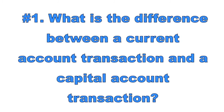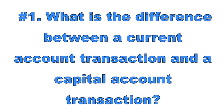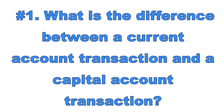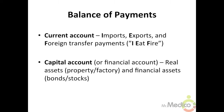Number one: what is the difference between a current account transaction and a capital account transaction? The balance of payments system keeps record of all foreign transactions. There are two main accounts: the current account and the financial or capital account. The current account consists of imports, exports, and foreign transfer payments. The financial or capital account consists of real assets and financial assets.